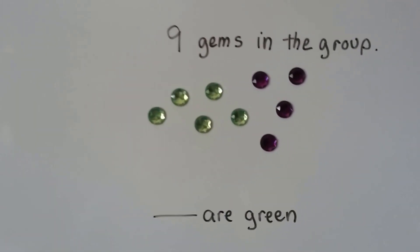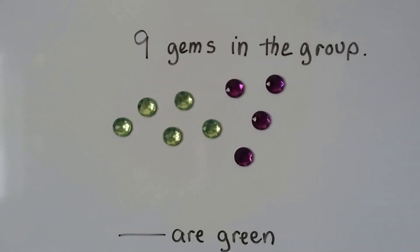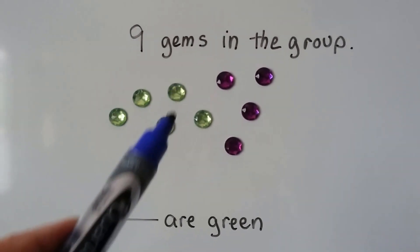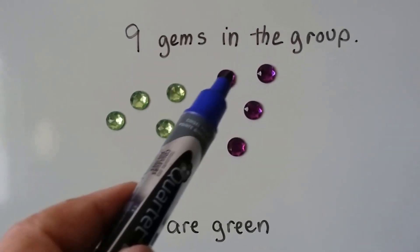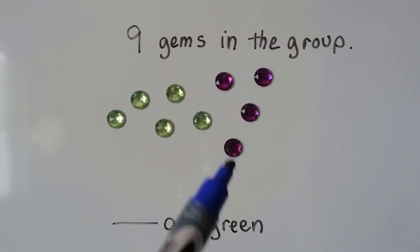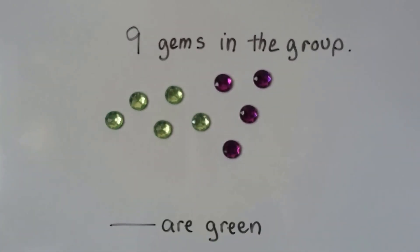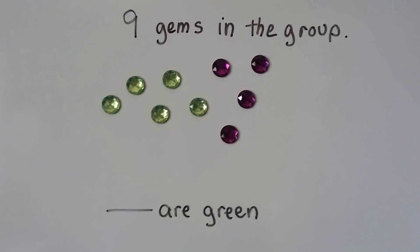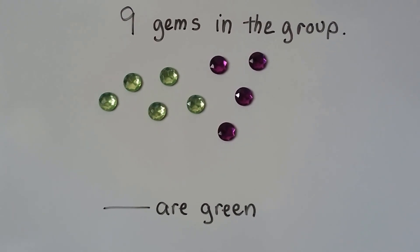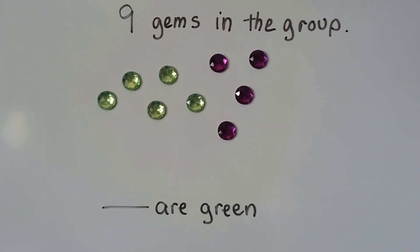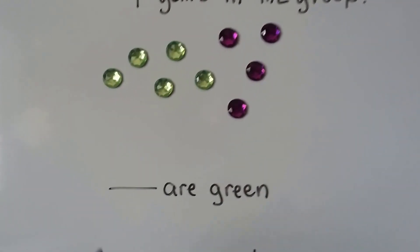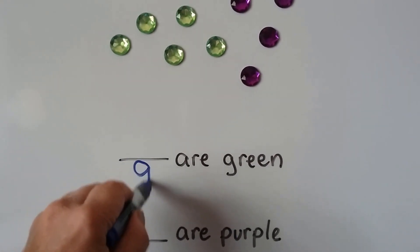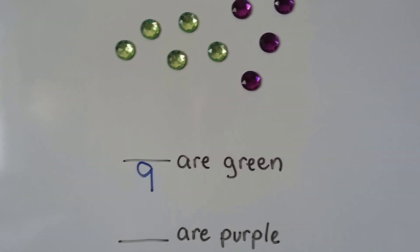Now we have nine gems in the group — one, two, three, four, five, six, seven, eight, nine gems in the group. So what's the fraction of gems that are green? Right away we can write how many are in the group — the denominator goes down here.